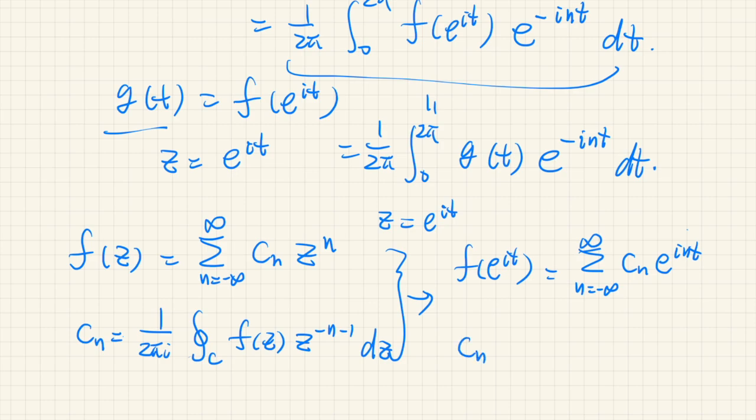So this is a Fourier series. And the coefficient cn is determined by 1 over 2 pi integral from 0 to 2 pi of f of e to the power of it, times e to the power of negative int, dt.